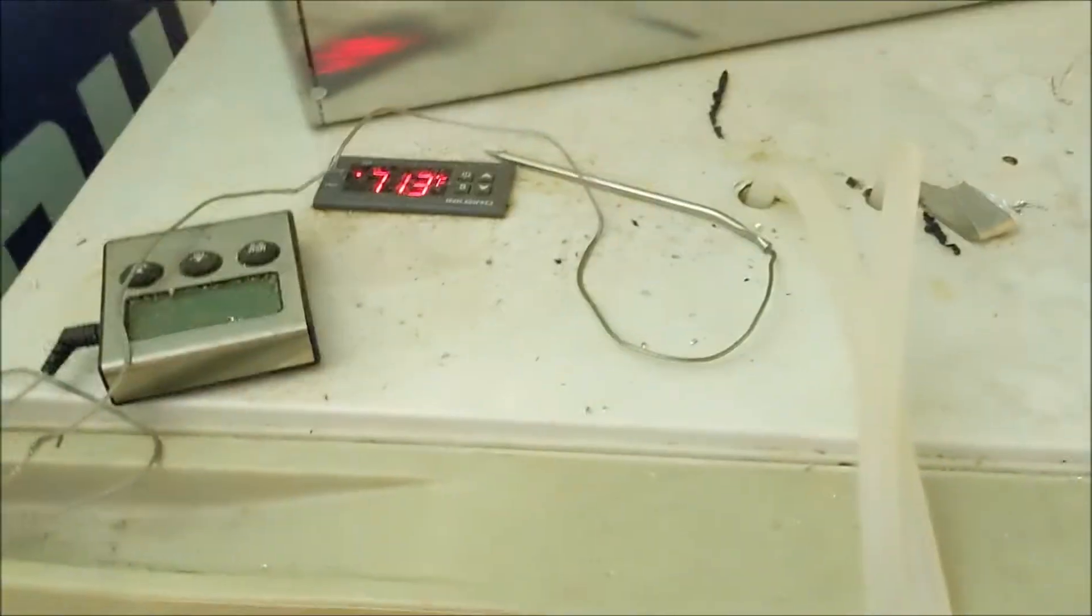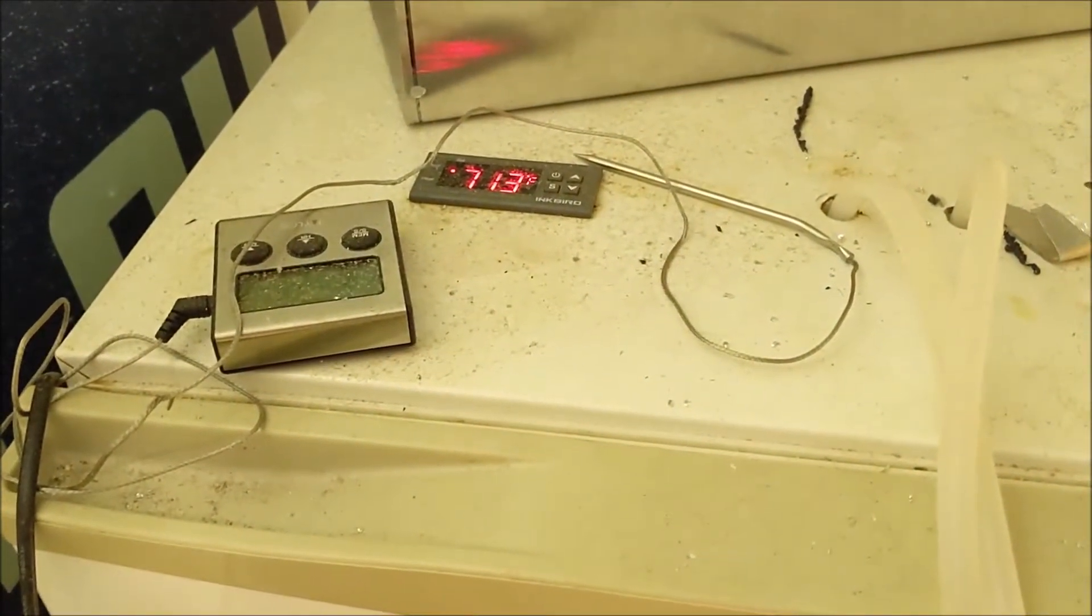Threw a cheap thermostat control off of Amazon in there. Put a jug of water inside. Stuck the freezer unit, which is actually the coil, the evaporator coil, down in there. So it's submerged in the water partially. Cheap aquarium pump at the bottom.